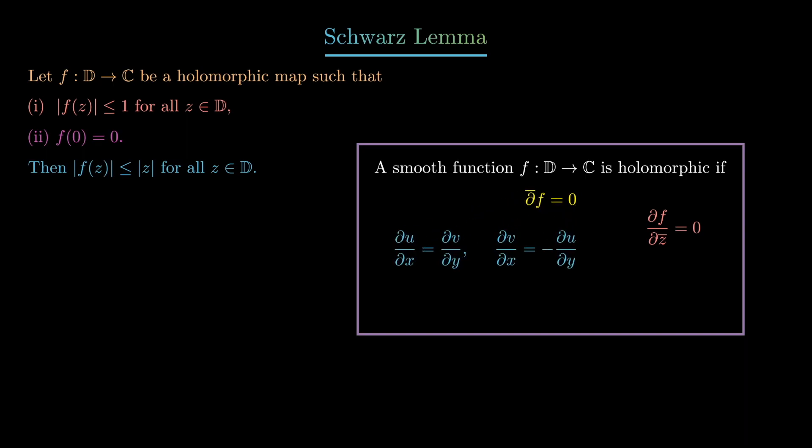If you write f as u plus iv, where u and v are the real and imaginary parts respectively, then d-bar of f vanishing is equivalent to the Cauchy-Riemann equations: partial u partial x equals partial v partial y, and partial v partial x equals minus partial u partial y. So the notion of a function being holomorphic is in essence the notion of a function being complex differentiable.